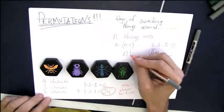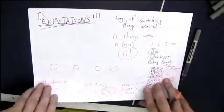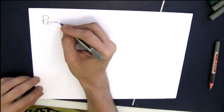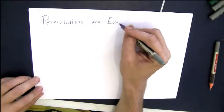If we have n things, then we have n times n minus one all the way down to one, which gives us n factorial, which we write with an exclamation point.